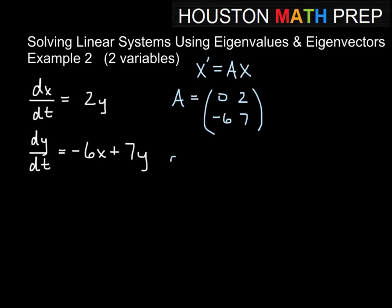And we will solve this taking the determinant of A minus λI equal to 0. So let's go ahead and write out what that would be. I'll move over here. That would be the determinant of A minus λI, which is 0 minus λ, 2, -6, 7 minus λ, and we set that equal to 0.